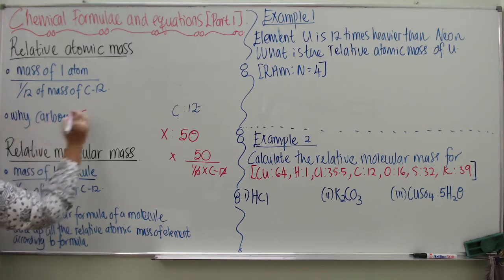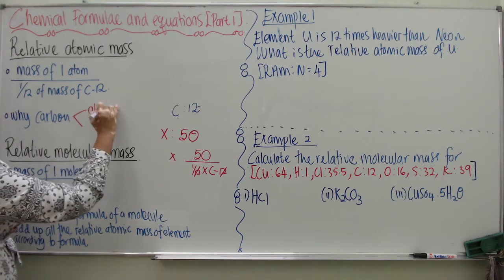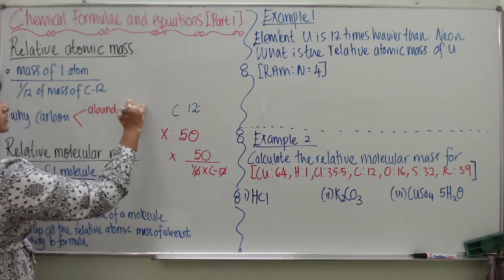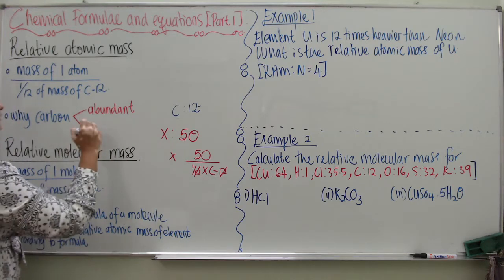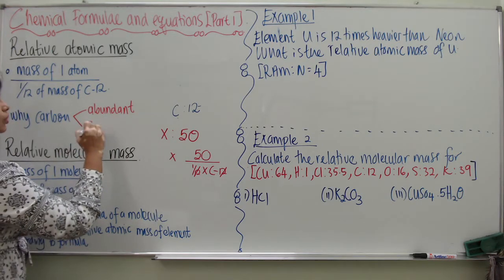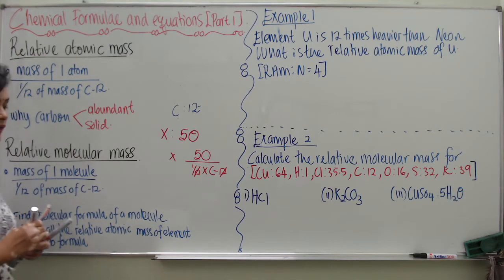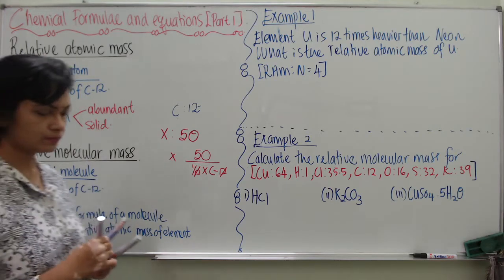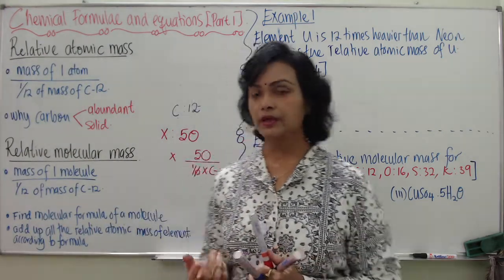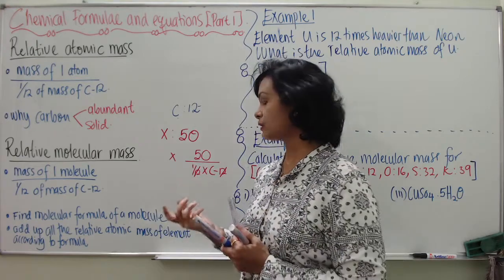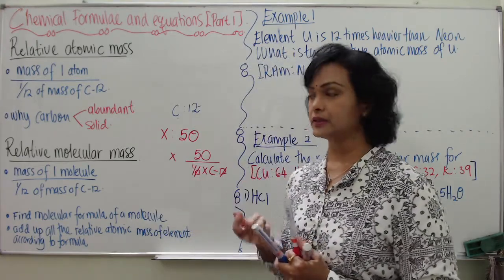Carbon is chosen because it is abundant — you can easily get Carbon — and also because it is a solid. Since Carbon is a solid atom, it is easy to find its mass accurately.